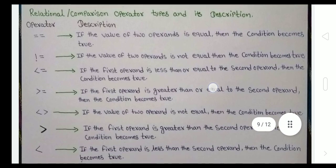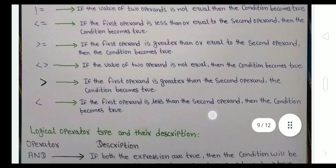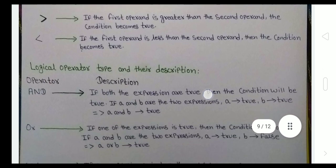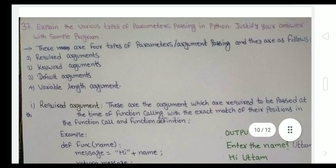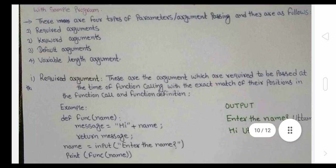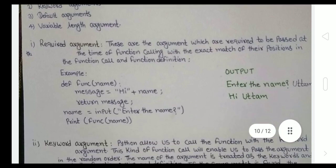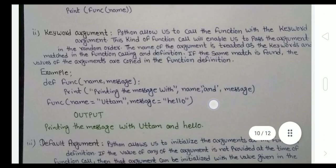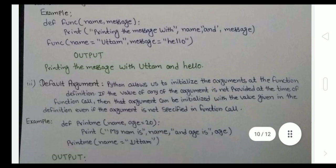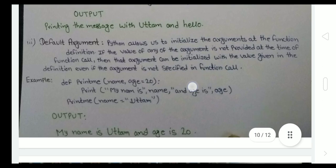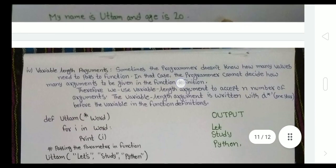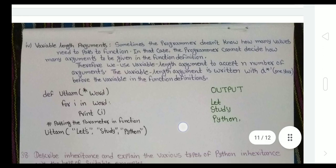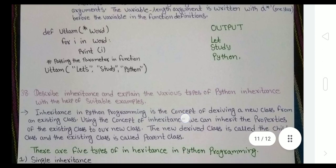Here comes the operator: relational and comparison are the same. The relational and logical operators and the various types of parameters: four types of parameters - required argument, keyword argument, default argument, and variable length argument. You guys just pause the video and you can write these things, or if you guys want the PDF, just WhatsApp me.